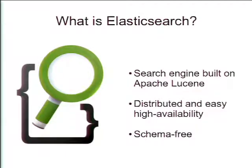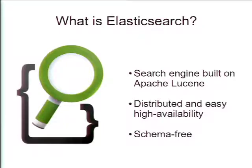Elasticsearch is a document-oriented search engine built on Apache Lucene. One nice thing about it is it's schema-free, so you don't have to define what all your fields are going to be — it takes them from the JSON input and figures it out by itself. It's also very easy to scale, especially in a multicast environment. If you can multicast on your network, all you need is the cluster name and it will automatically find other nodes for that cluster and rebalance itself as needed. Most cloud providers don't do multicast, but Rackspace does if you use their private cloud networks.